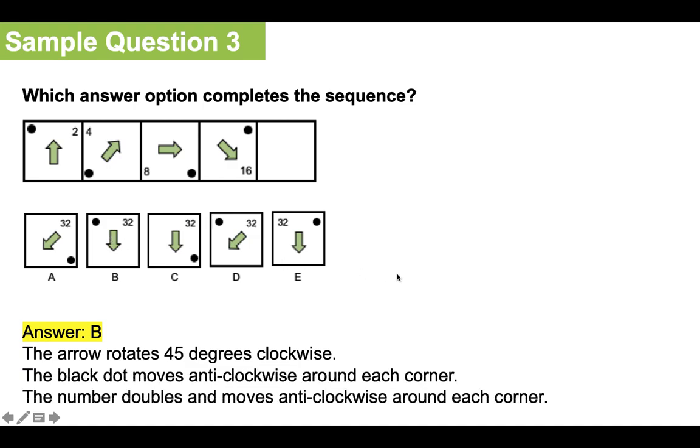The black dot moves anticlockwise around each corner. And the number doubles and moves anticlockwise around each corner each time. So the correct answer there is B.